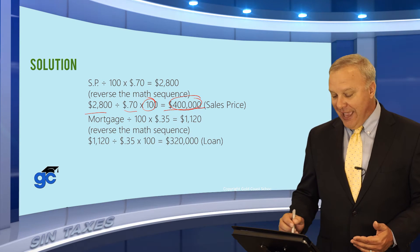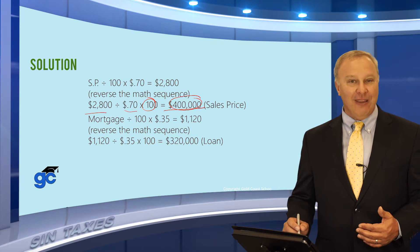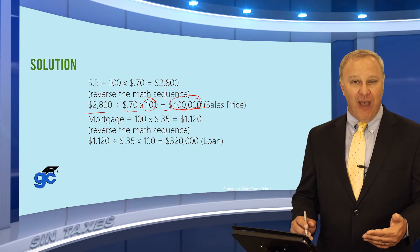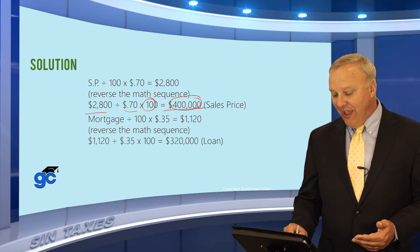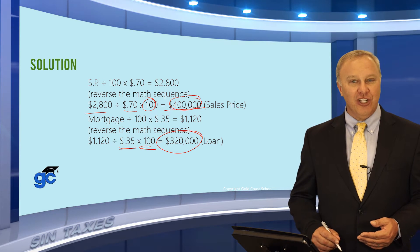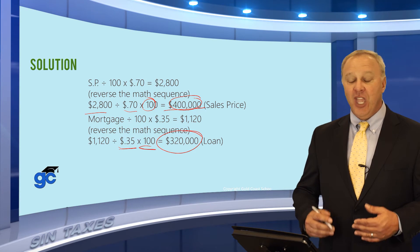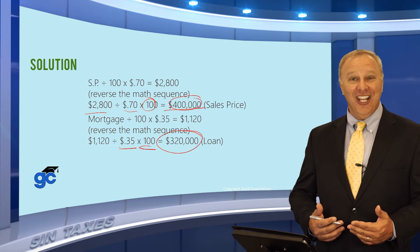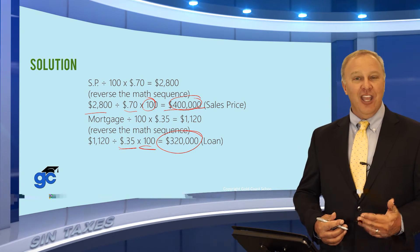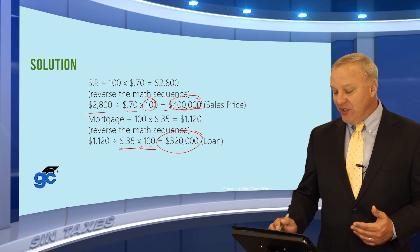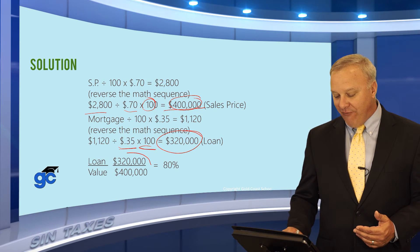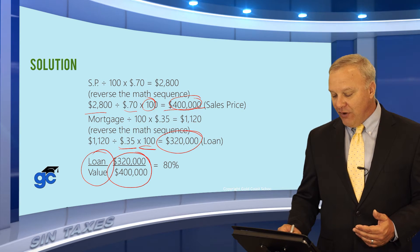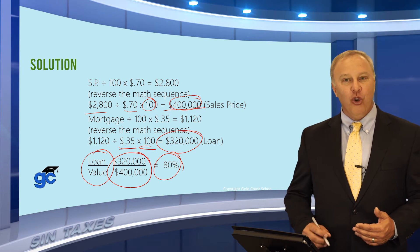You do the same thing with the note tax. The mortgage amount times $0.35 divided by 100 gives you the note tax, so simply take the note tax $1,120, divide by $0.35, then multiply by 100. The loan amount is $320,000. The question asked for the loan-to-value ratio, so you take the loan divided by the sales price: 320 divided by 400 equals 80% or 0.8.